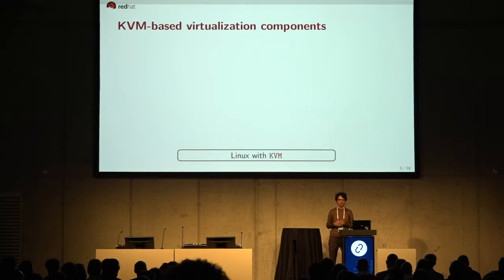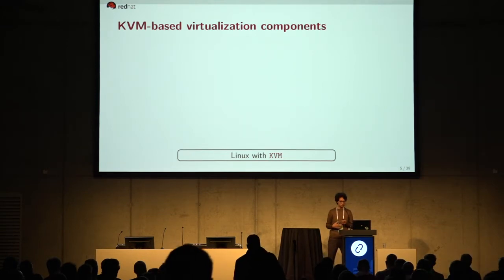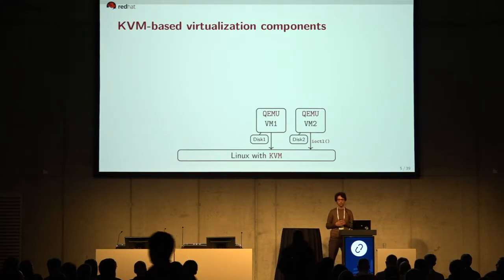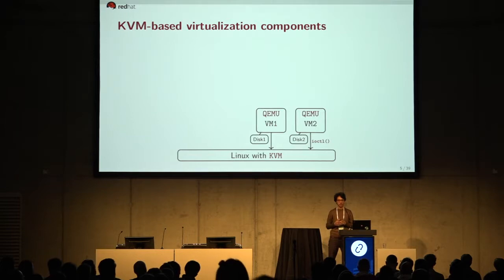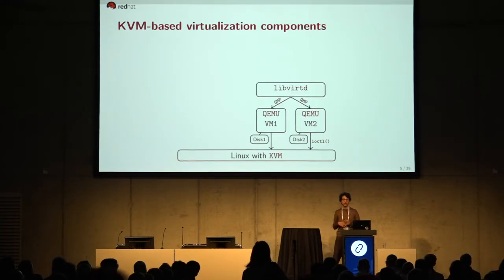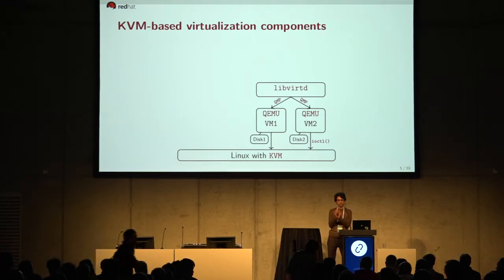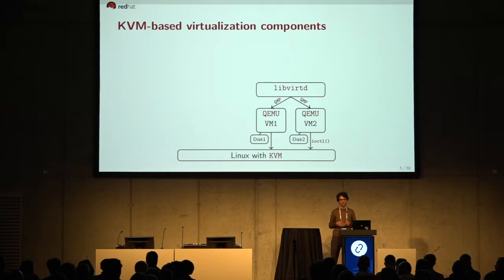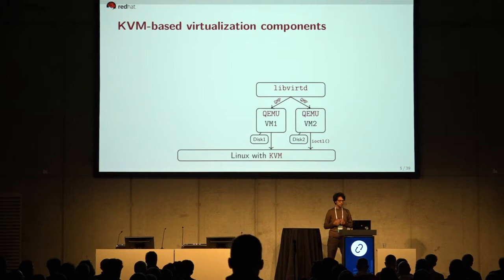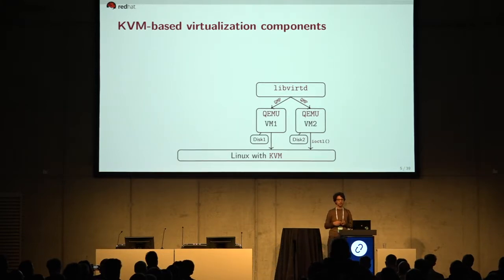A quick refresher on the KVM-based virtualization stack. The bottom-most layer is the Linux kernel with the KVM module. On top of it is the QEMU process, which sits alongside other processes on the host, has disk images associated with it, and interacts with KVM via system calls. QEMU's scope is limited to a per-process view — it only knows about one QEMU instance. That's where the libvirt project comes in, providing a hypervisor-agnostic API to manage multiple virtual machines and their life cycle.